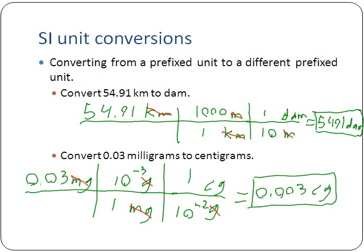Keep in mind as you do these that you do want to keep significant figures. Because all the things we've multiplied or divided by have been conversion factors — and conversion factors have infinite significant figures — we don't have to worry about them. That's why our original numbers and final numbers have the same number of significant figures. But it's something you do want to keep in mind as you work through these problems.